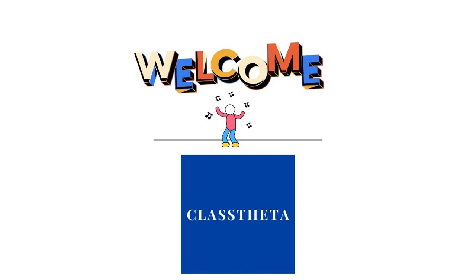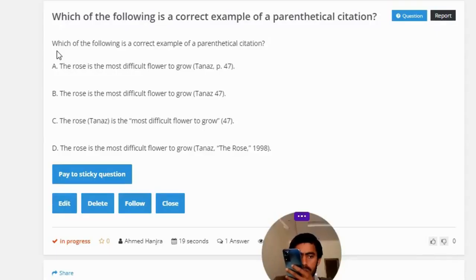Today's question is: which of the following is a correct example of a parenthetical citation? Option A: The rose is the most difficult flower to grow (Tenors, p. 47).